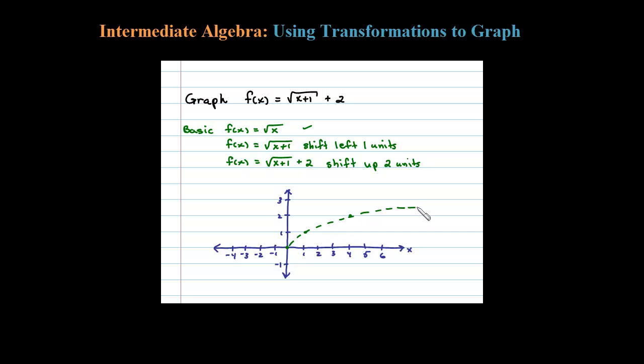Now we're going to look at the square root of X plus 1. Remember when you add inside the argument it's opposite, so here we're going to shift left one unit. We shift this point left one unit and this point left one unit.